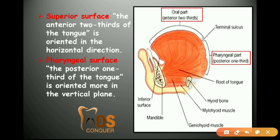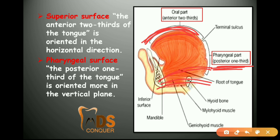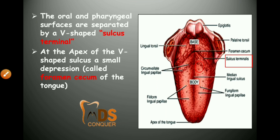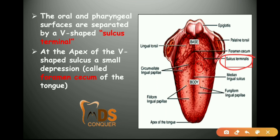The superior surface — the anterior two-thirds of the tongue — is oriented in a horizontal direction, whereas the posterior one-third or pharyngeal part is oriented in a vertical plane. The sulcus terminalis separates the pharyngeal part from the oral part, and the foramen cecum is present at the apex of the sulcus terminalis.